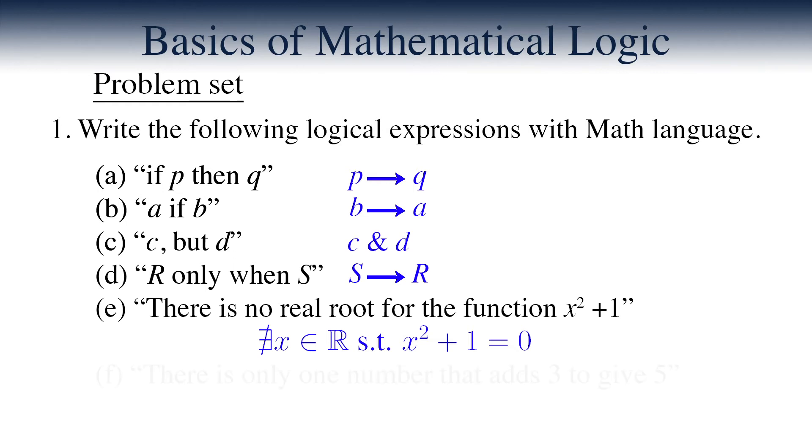Finally, item F states that there is only one number that adds 3 to give 5. We hear a statement about the uniqueness of something here. So we use the unique existential quantifier to write, there exists a unique number A such that A plus 3 is 5. Obviously, we all know that A is 2.